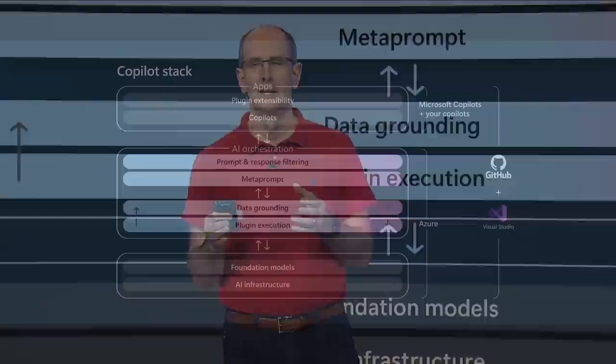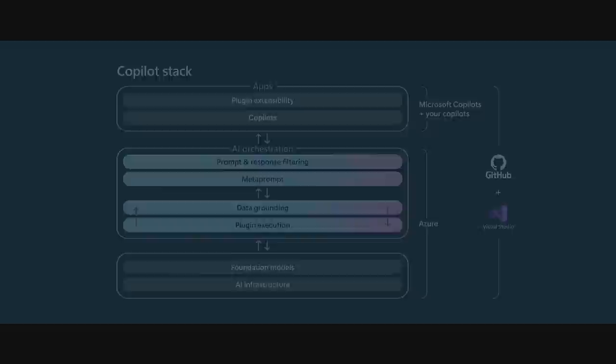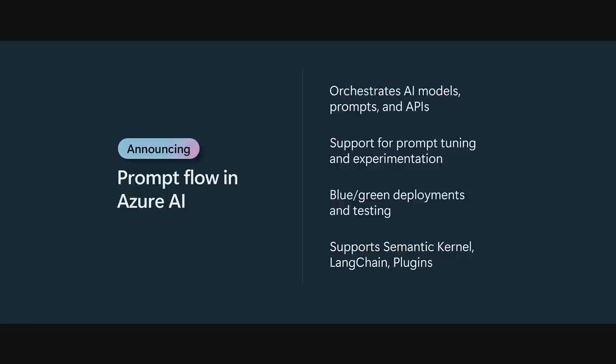Data grounding is a critical part of how we build applications. AI orchestration also includes prompt engineering — constructing the prompt and meta prompt that you provide the AI model to produce a stronger, more specific response for the user. We're introducing new Prompt Flow support in Azure AI. Prompt Flow provides end-to-end AI development tooling that supports prompt construction, orchestration, testing, evaluation, and deployment. It makes it incredibly easy to leverage open-source tools and frameworks like Semantic Kernel and LangChain.